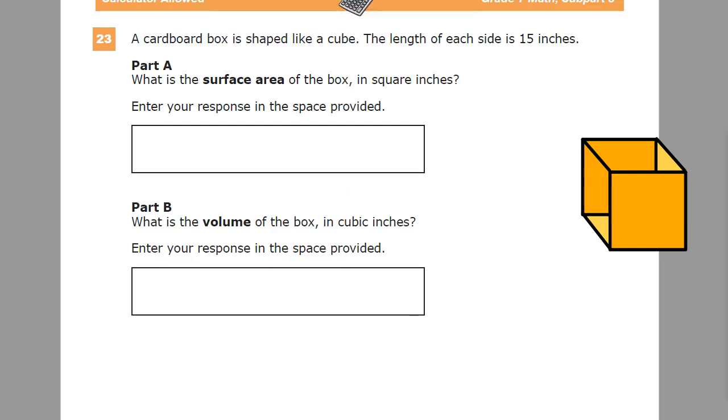This is the grade 7 math practice test for TN Ready. This is question number 23. A cardboard box is shaped like a cube. The length of each side is 15 inches. As you can see, I sort of put one together ahead of time because watching me try to do it by hand is embarrassing for all of us, so we'll just leave it at that.